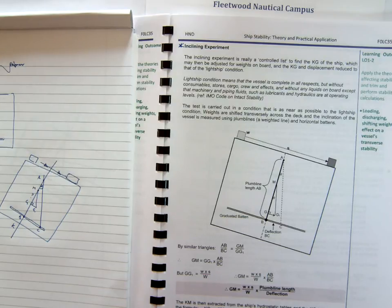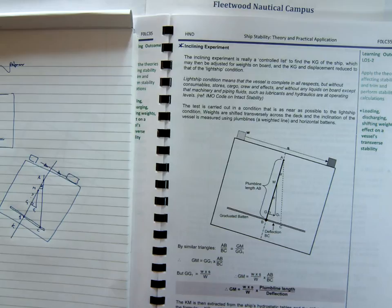It's very important because once we start loading cargo, fuel, stores, etc., we use our table to calculate our new centre of gravity, compare that to our metacentre, and that gives us the GM of the vessel. The GM is a very important value to know because it basically indicates how stable our vessel is.